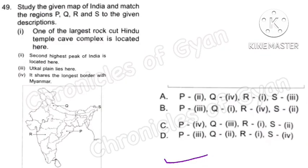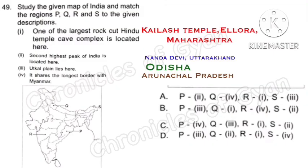Question 49: Study the given map of India and match the regions P, Q, R and S to the given descriptions. Description 1: one of the largest rock-cut Hindu temple cave complexes is located here. The correct answer is Option D.